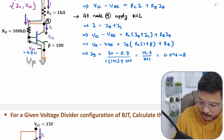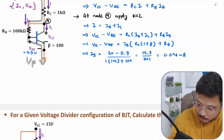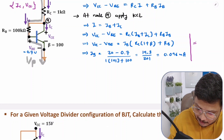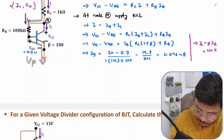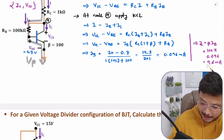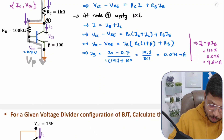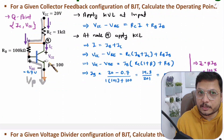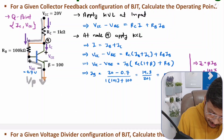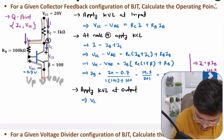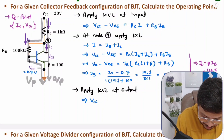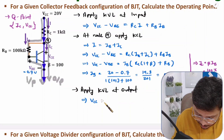From IB we can find IC easily. IC equals beta times IB, so IC = 100 × 0.096 = 9.6 milliampere. That is the output current calculated. Now we want VCE, the output voltage. To get VCE we apply KVL at the output side. In this output loop, the voltage is VCC and another voltage is VCE, happening from plus to minus, so I write minus VCE.